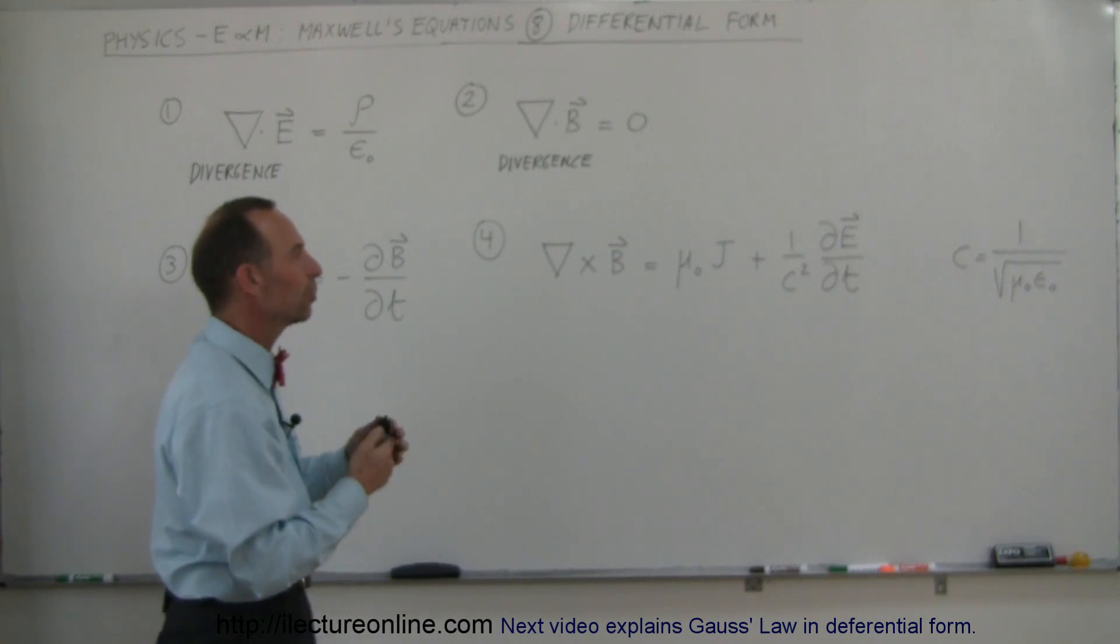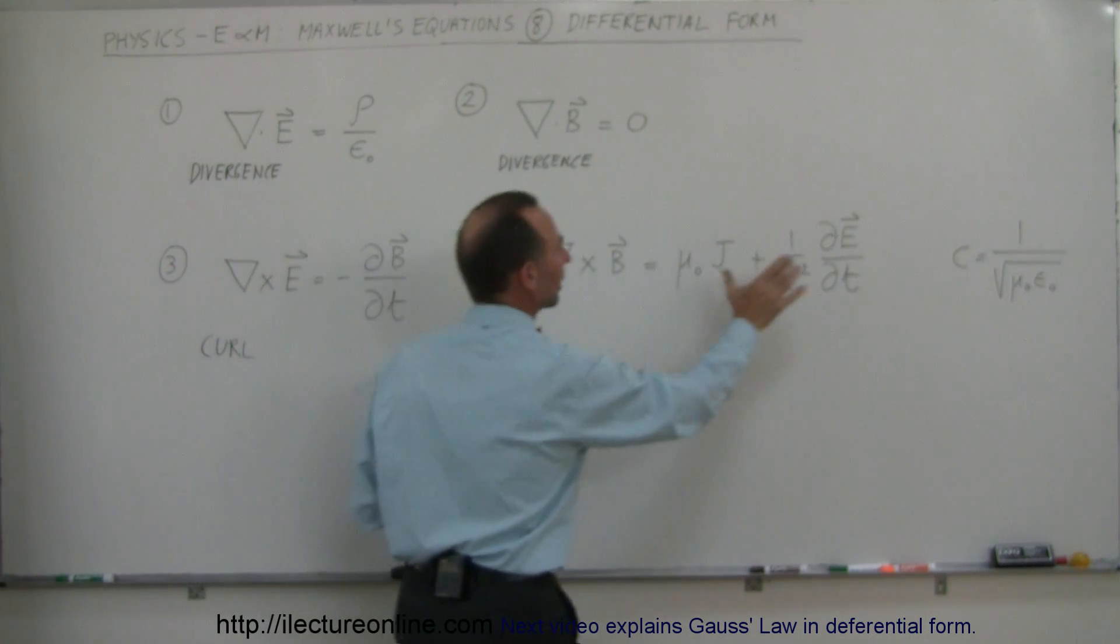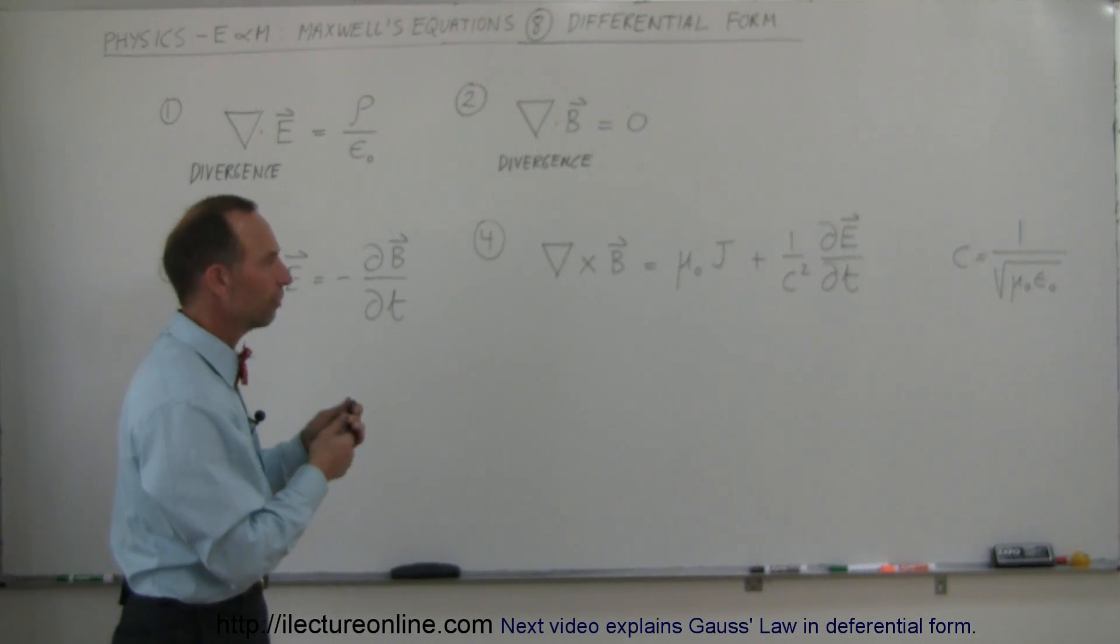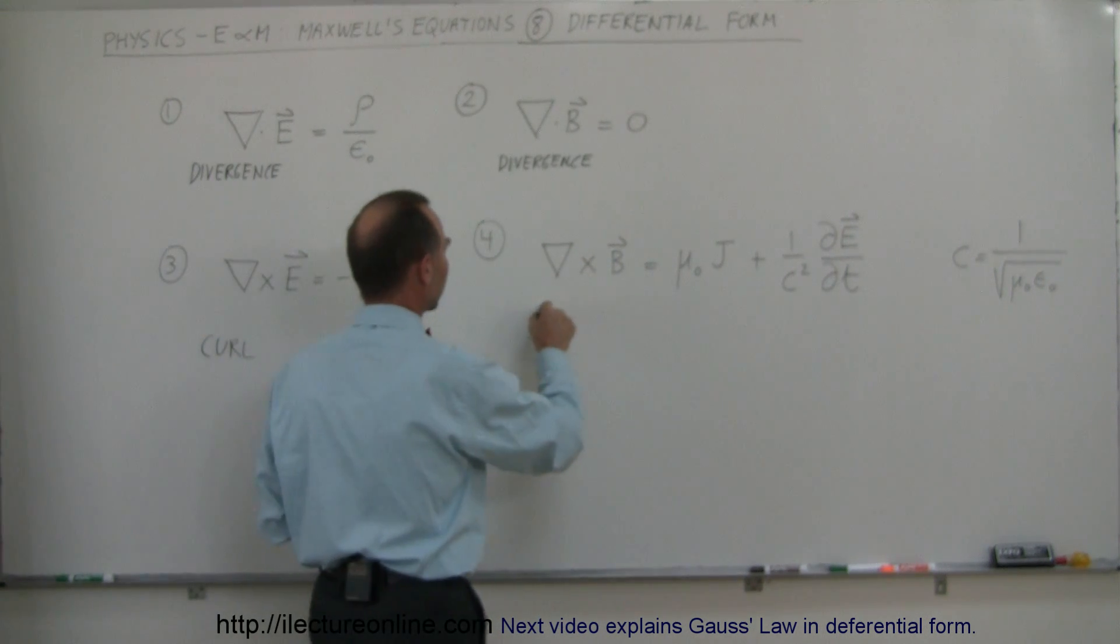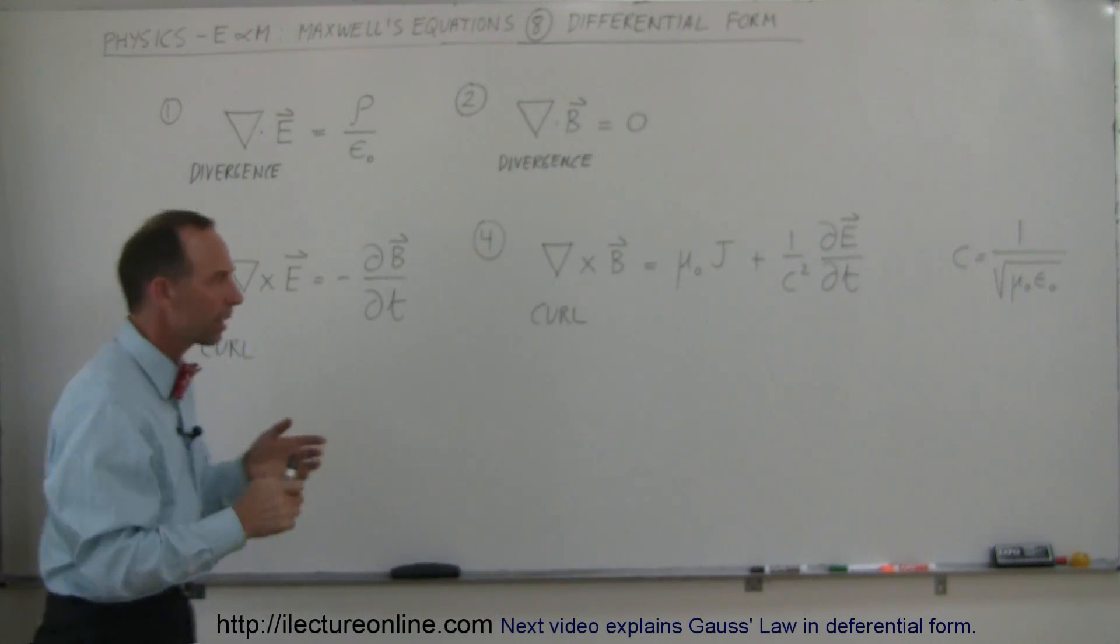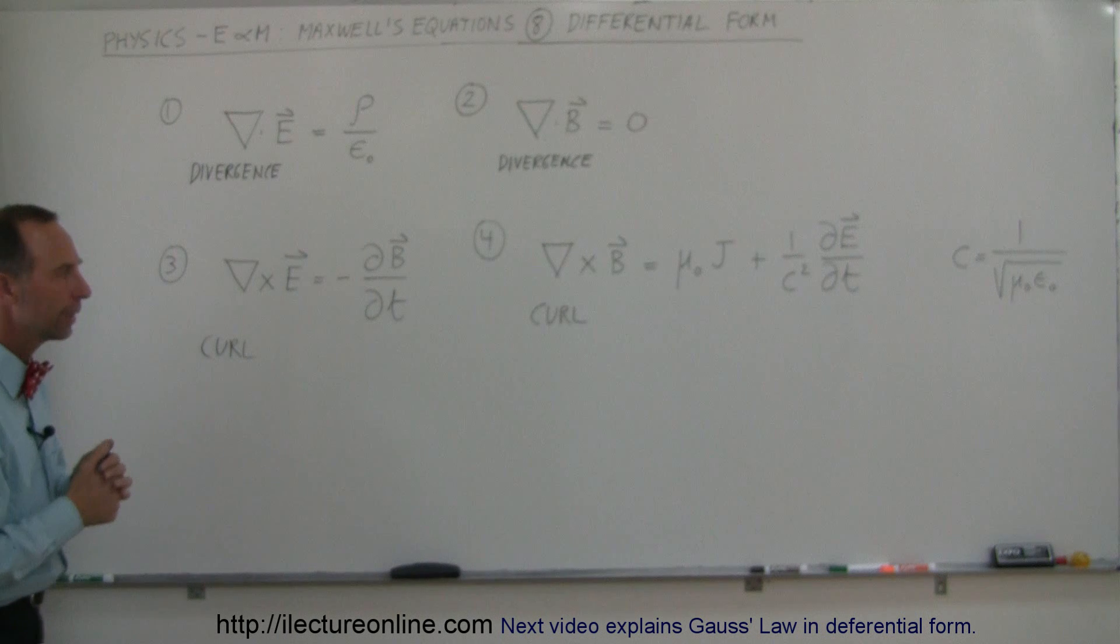the moving charge or the current inside times mu sub nought, or also can be caused by changing electric field or changing electric flux through a loop. And so again this is called a curl and it's kind of like a cross between taking a cross product and integrating around a loop.